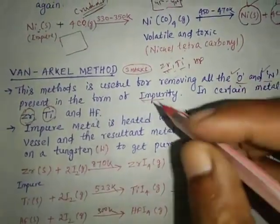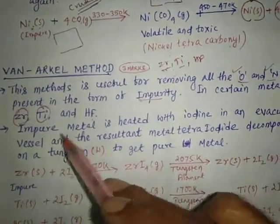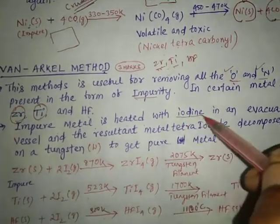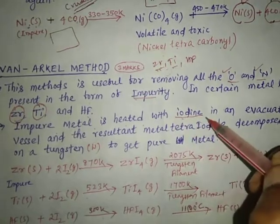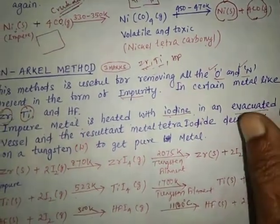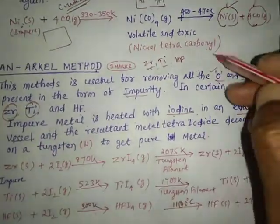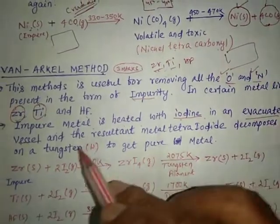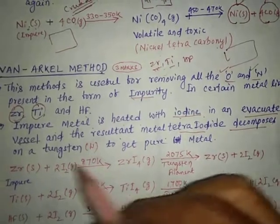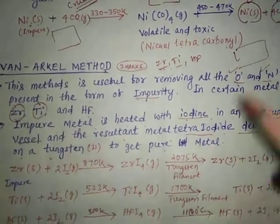From the crude metal we obtain pure metal. Impure metal is heated with iodine in an evacuated vessel, and the resultant metal tetraiodide is decomposed on a tungsten filament to get pure metal.